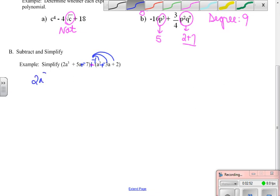So what I'm going to have is I'm going to have 2a cubed plus 5a plus negative 7, that doesn't change, plus negative 1 times a cubed is negative a cubed, negative 1 times negative 3a is positive 3a, and negative 1 times positive 2 is negative 2. Once I've done that distributed with that negative, I can go ahead and combine my like terms.